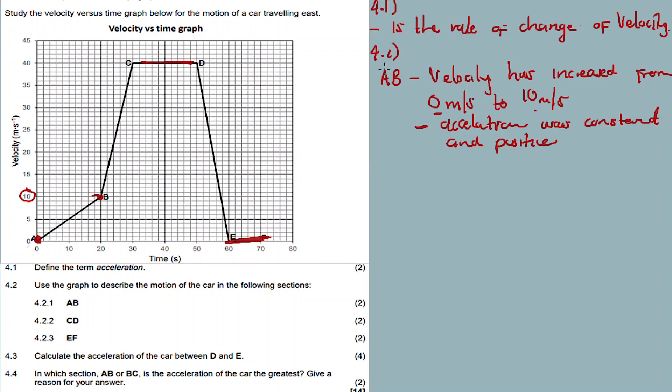Then 4.2.2, now C-D. In section C-D, there was a constant velocity or uniform velocity - constant velocity of 40 meters per second. Then there was also zero acceleration.